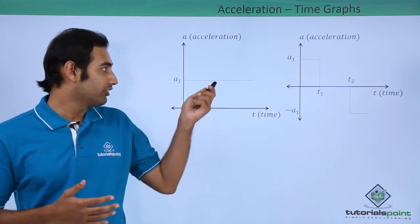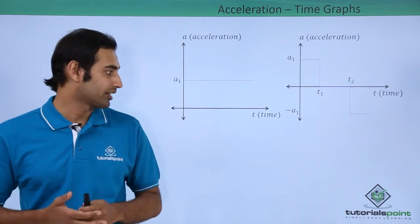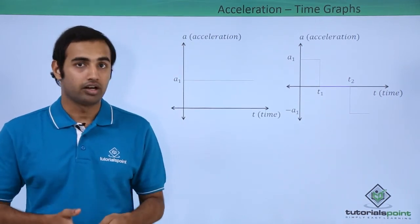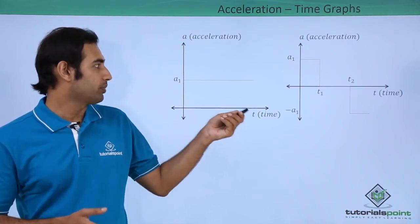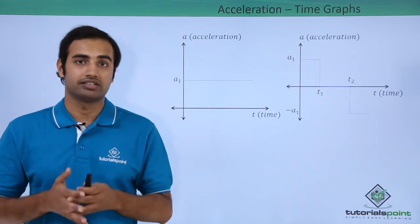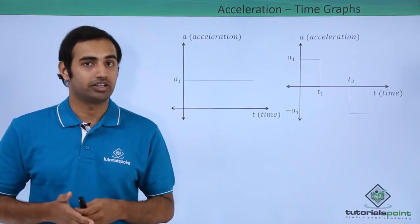Now in this graph we have this line parallel to the time axis indicating a constantly accelerated motion. How? Because as the time continues to pass, the value of acceleration does not change. It still stays at a1, which indicates a constant acceleration.